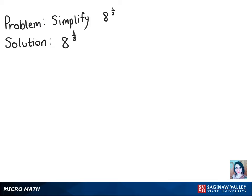The first thing we need to know to simplify this problem is that when there is a number under 1 in the fractional exponent, it is a root. So we know from looking at this that 8 to the 1/3 power is the cubed root of 8. And the cubed root of 8 is 2, and that is our final solution.